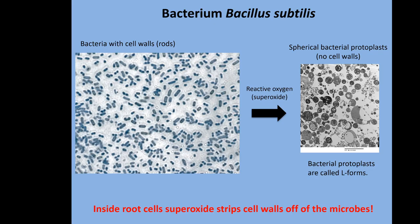Once internalized, the plant secretes superoxide onto the microbes. Superoxide is highly potent — it strips the cell walls off those bacteria. Here you can see microbes with cell walls, and then after reactive oxygen hits them they lose their cell walls and form these little protoplasts. The protoplasts bud and have no cell walls — they'll be all different shapes and sizes. Inside the plant some older ones break down and nutrients are fully extracted, but they keep replicating, so these continue to grow inside the plant.